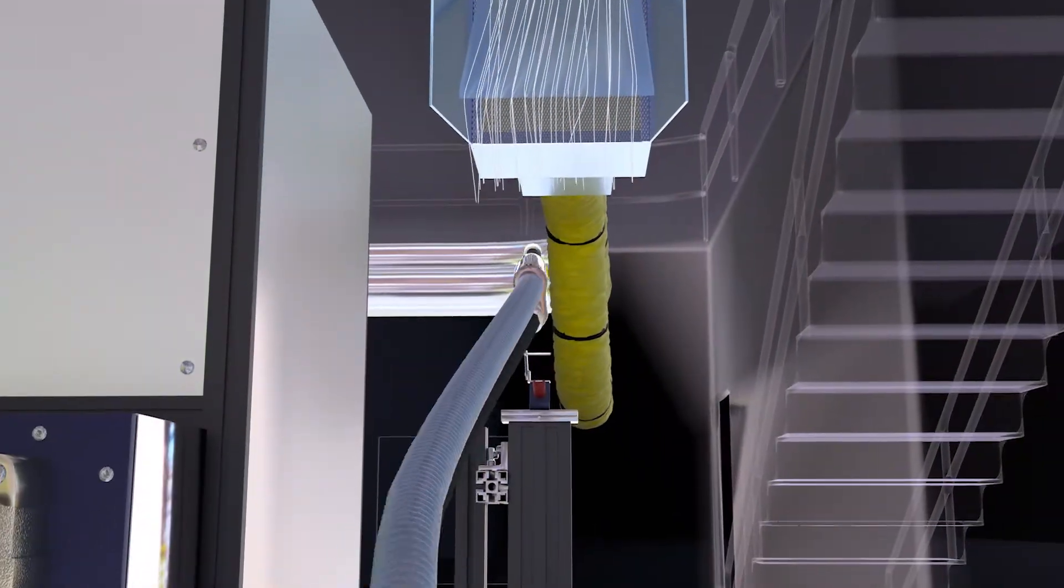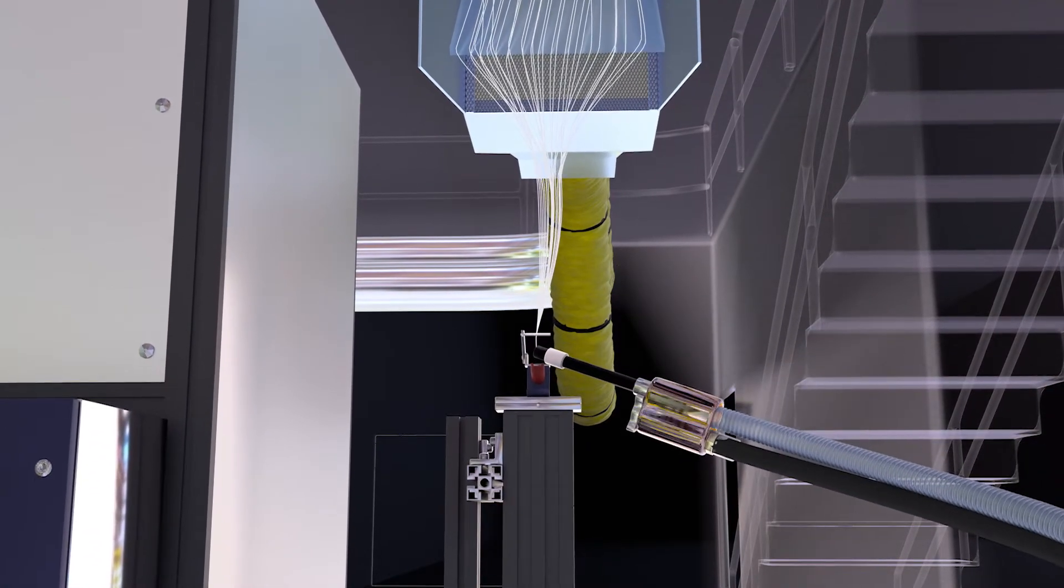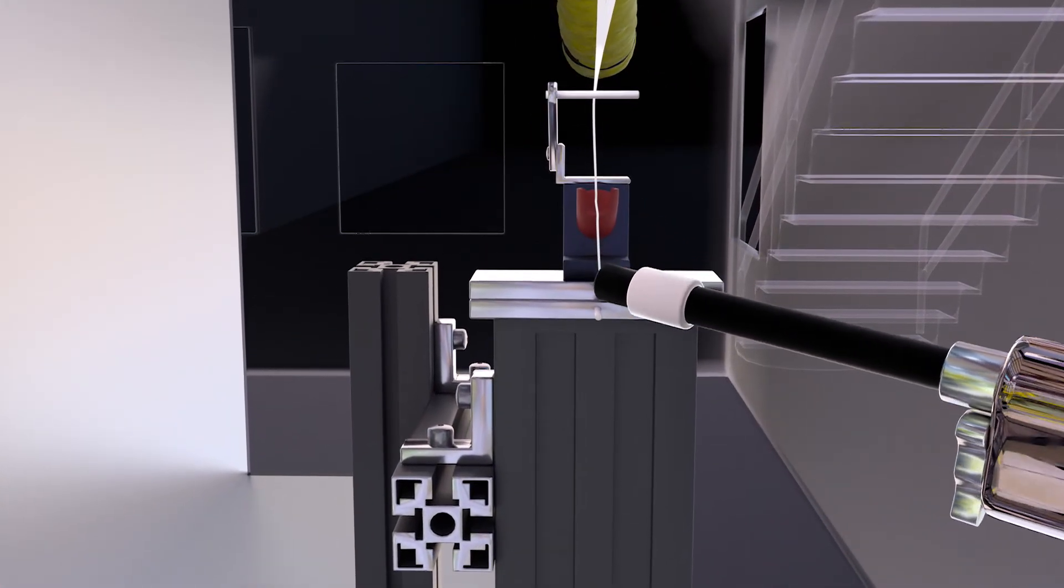The operator then gathers the filaments, using a vacuum to add tension that maintains molecular alignment. The fiber is treated with an oil and water solution to remove static charge.